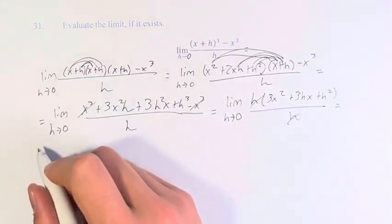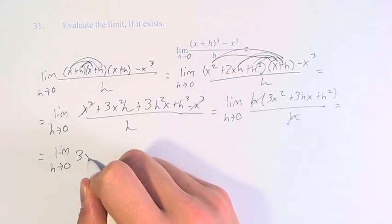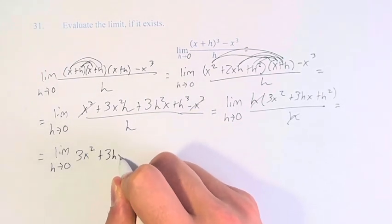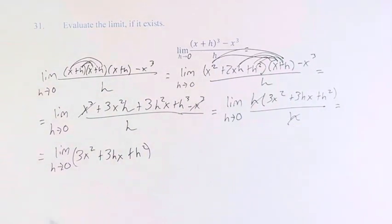We do that because we can now cancel out the h and we have the limit as h approaches 0 of 3x² + 3hx + h². Now we can plug in 0 without dividing by 0 like we have an issue in the original limit.